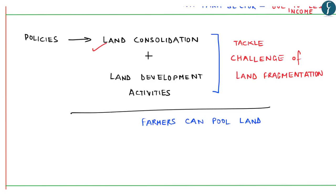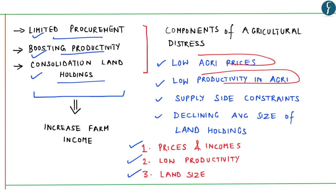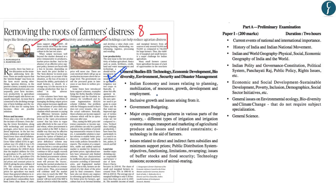The article suggests that farmers can voluntarily come together and pool land to gain the benefits of size, and through this, farmers can yield the benefit of collective crop yield. On a concluding note, the article says that farmers' distress is mainly due to low prices and low productivity. Suggestions of limited procurement, boosting productivity and consolidation of land holdings can help farmers in reducing agrarian distress. However, the government must come up with a long-term and sustainable policy. Hence, this article becomes extremely important from our examination perspective.